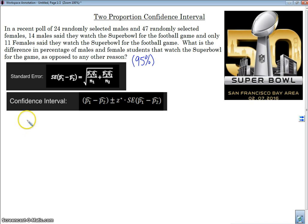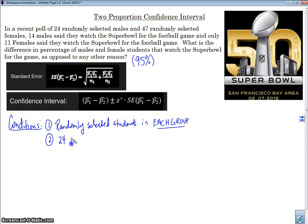So, the first thing we do whenever we're doing some sort of inference is that we need to do our conditions of inference. We're going to label our conditions. And the great thing is our conditions aren't very different from our one proportion. The first one is that we have randomly selected students in each group. So, this is the part that's different. We have two different groups that we are taking consideration about. 24 is less than 10% of all male students.